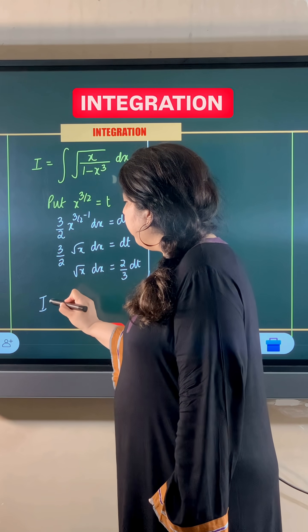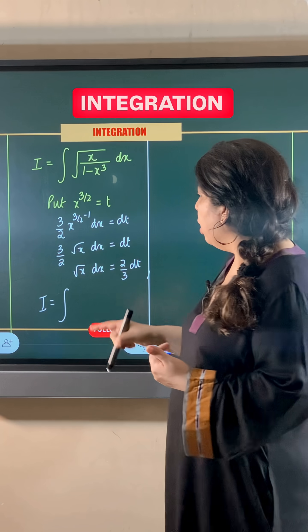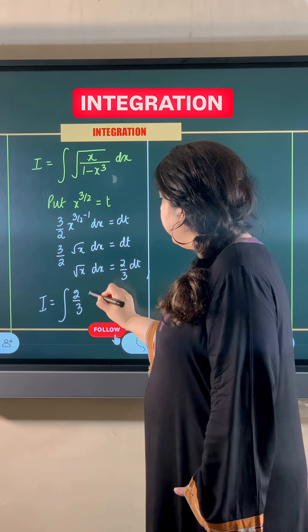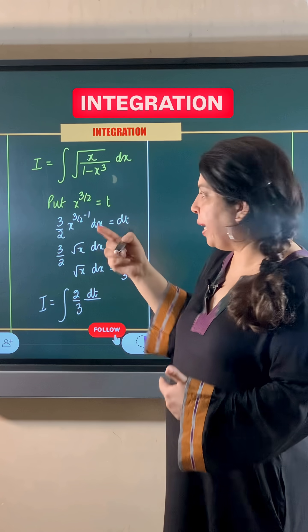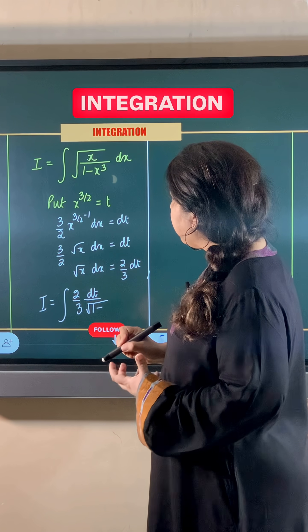Now in the integral, I have root x in the numerator. So this root x dx can be substituted by 2 by 3 dt. And in the denominator, I have root 1 minus x cube, which is root 1 minus what is x cube.